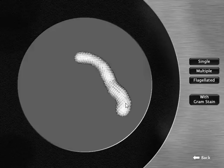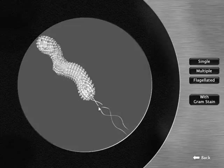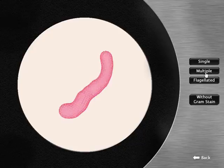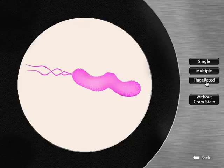When I click on multiple, the view is of several bacteria. The flagellated button shows a bacterium with flagella, and the with gram stain button shows the bacterium with a gram stain. Note that you can switch between single and multiple bacteria views once the with gram stain button has been clicked. You may also turn the gram stain on and off.